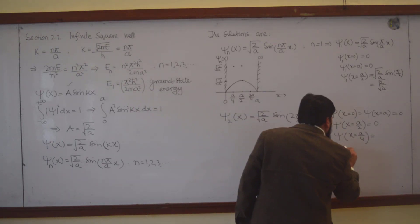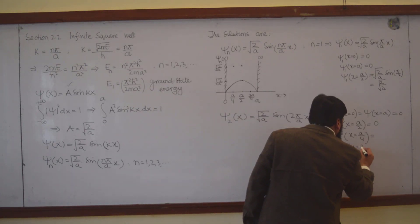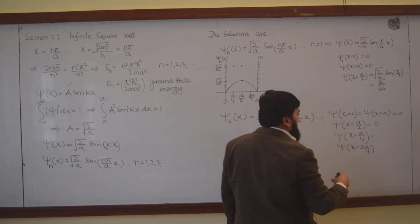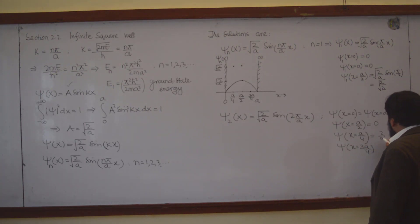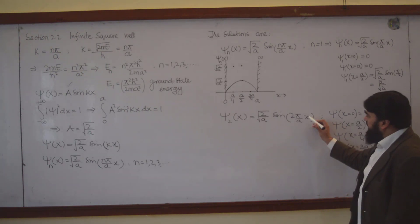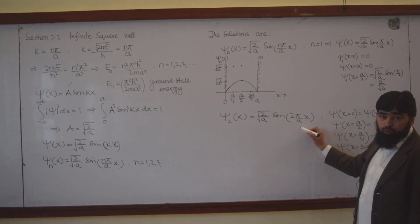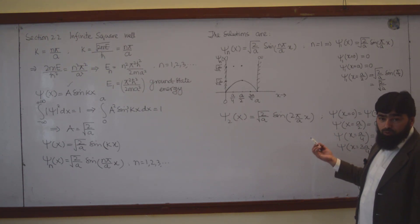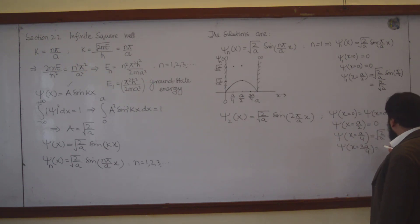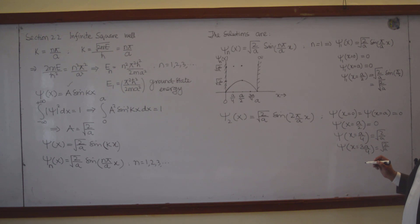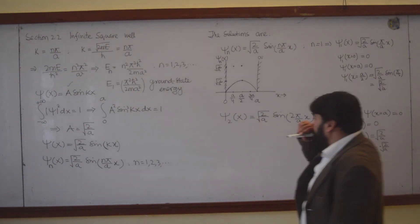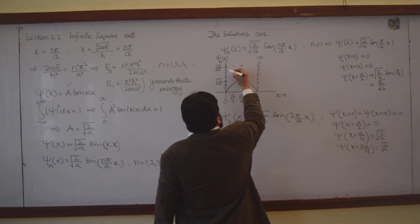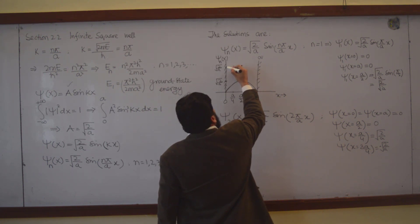Let's check ψ₂ at x equals 3a/4. At 3a/4, the argument becomes 3π/2. Sin(3π/2) is actually minus 1. So the value here is minus √(2/a).